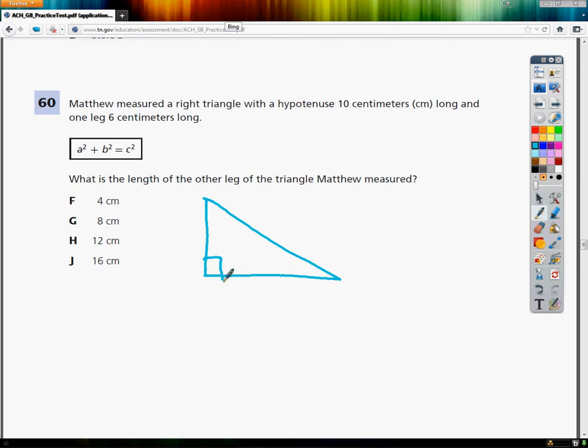With a hypotenuse of 10 centimeters. The hypotenuse would be that long side. It's got the long name, so it should be the long side. 10 centimeters. And one leg of 6 centimeters. So I'm just going to pick one and say it's 6. Why not?